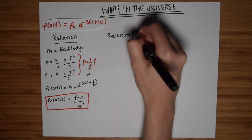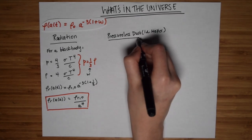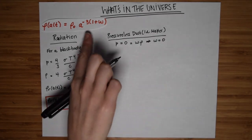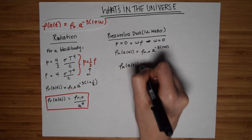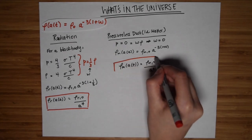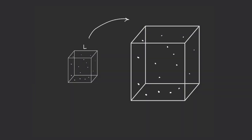Next, let's consider pressureless dust, aka matter. Since it's pressureless, w is equal to zero, and rho decays like 1 over A to the power of 3. This should also make sense, because the energy density of matter just dilutes by a factor of 1 over the volume. Here, we don't pick up an extra factor of 1 over A, because matter, unlike light, does not redshift.